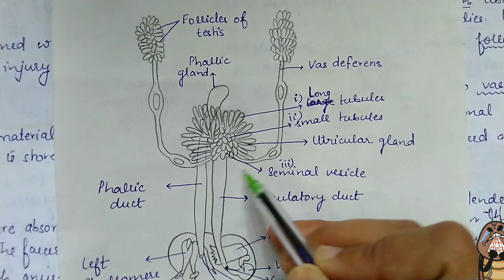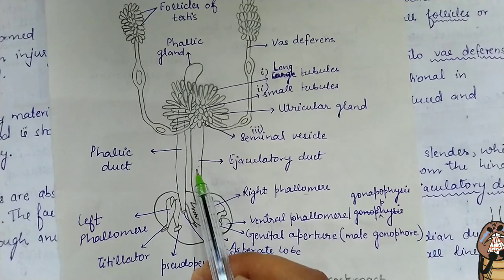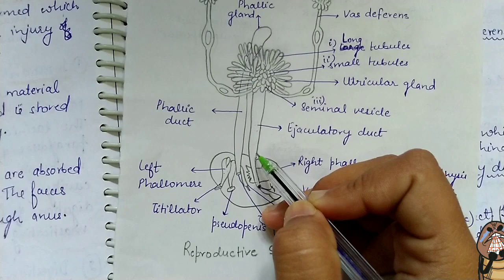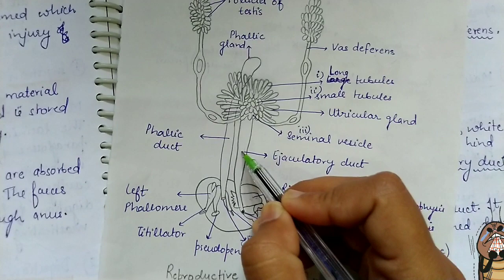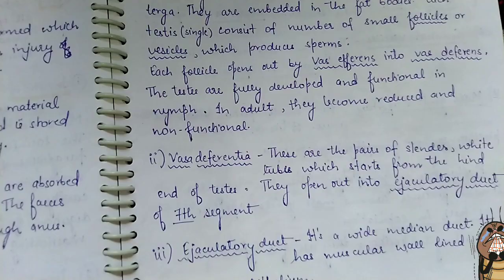The ejaculatory duct is also a wide median tube with a muscular wall lined by glandular epithelium. The anterior end of the ejaculatory duct consists of the utricular gland, and it ends in a genital aperture or male gonophore.